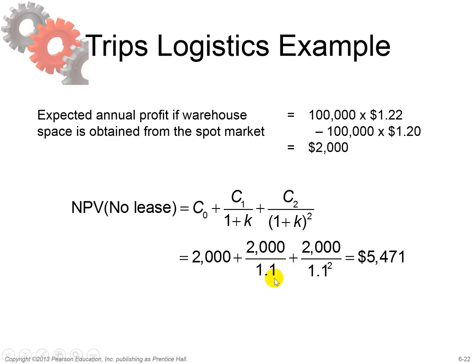For the second year, we carry the value back to the net present value. When we add all of this up, we arrive at a total net present value for the spot market option over all three years of 5,471 dollars.